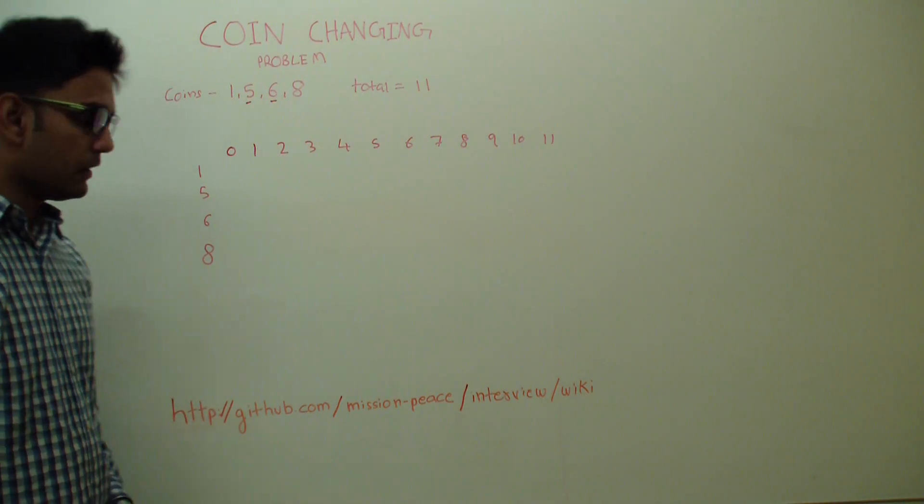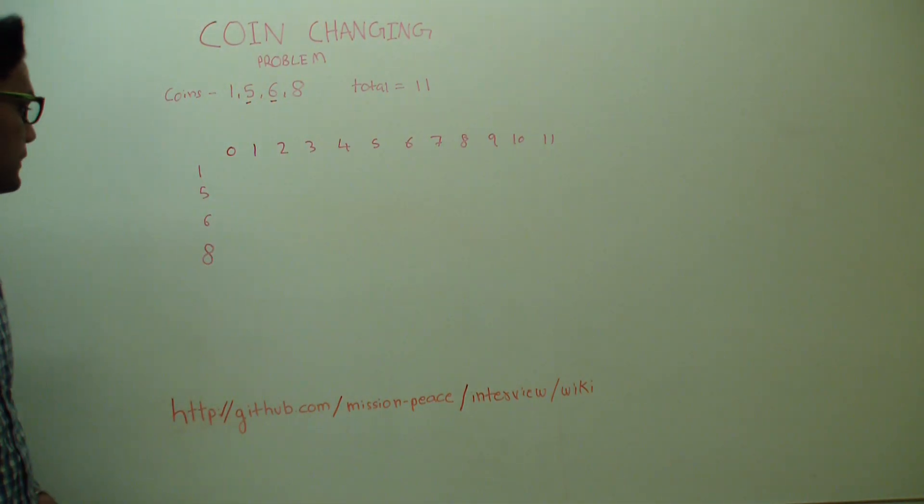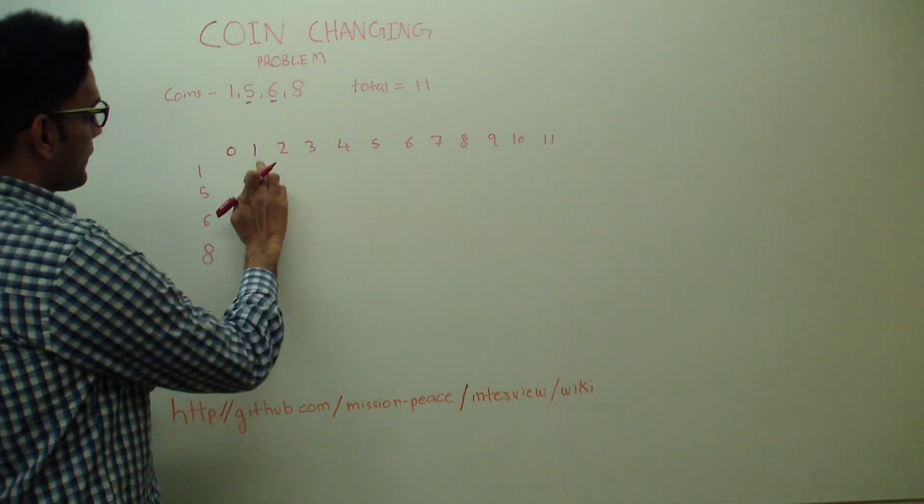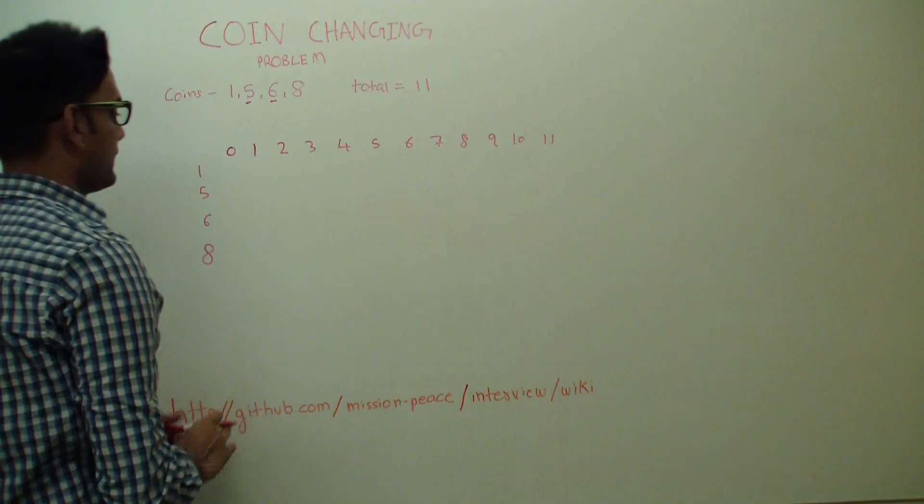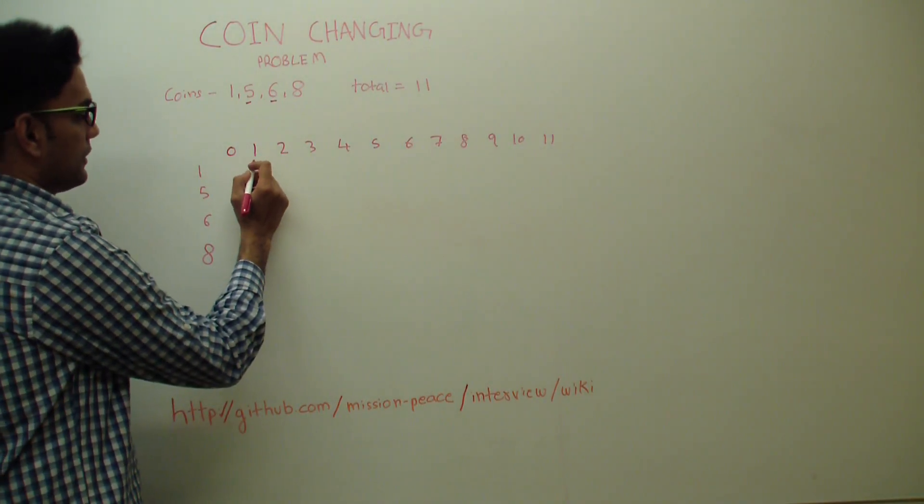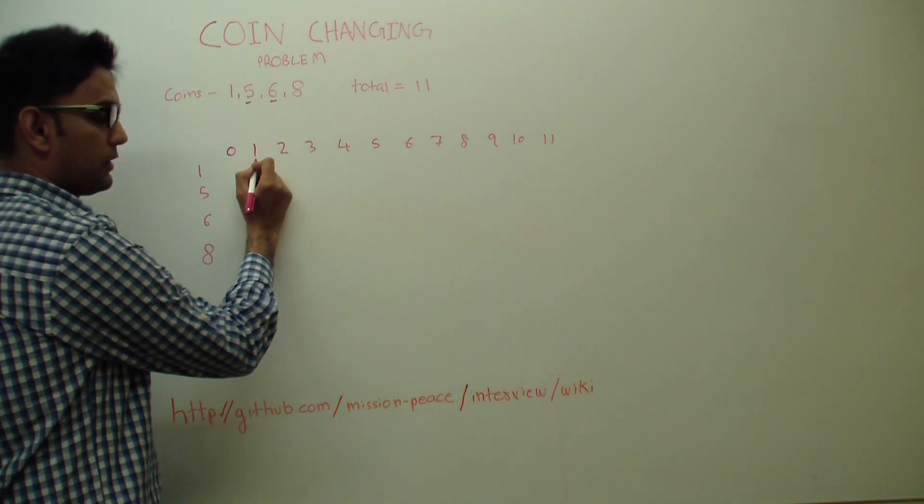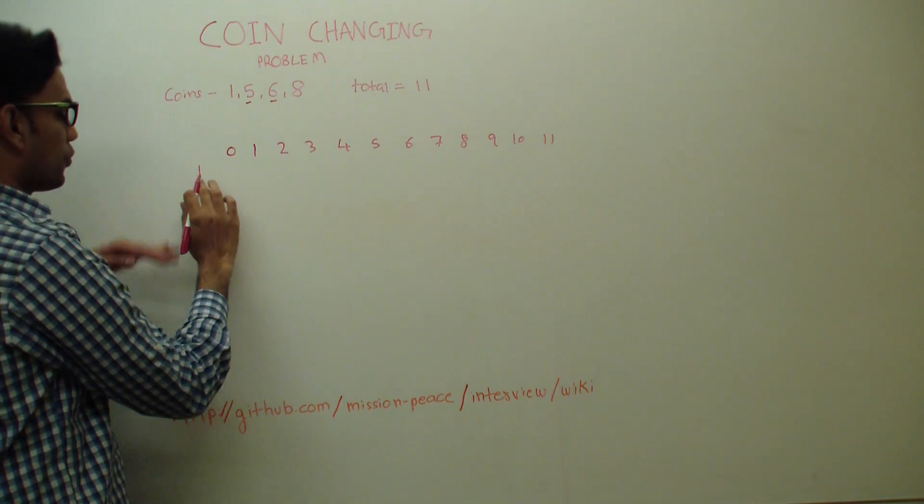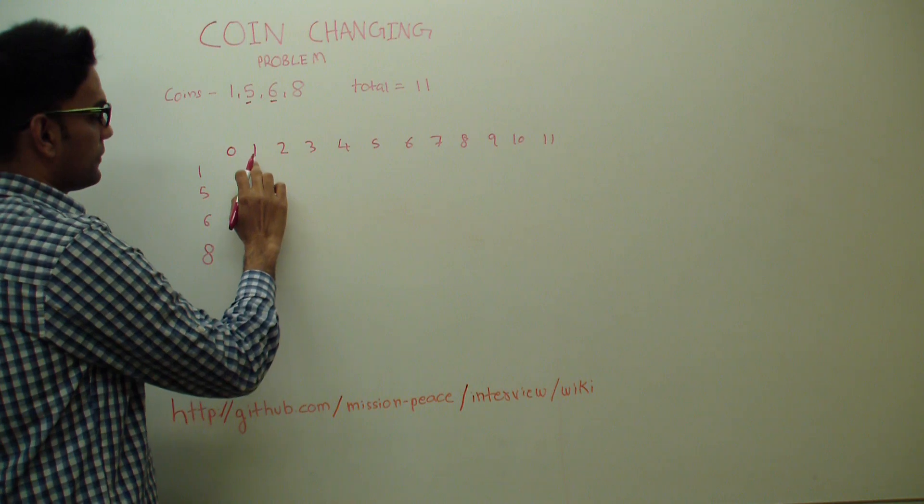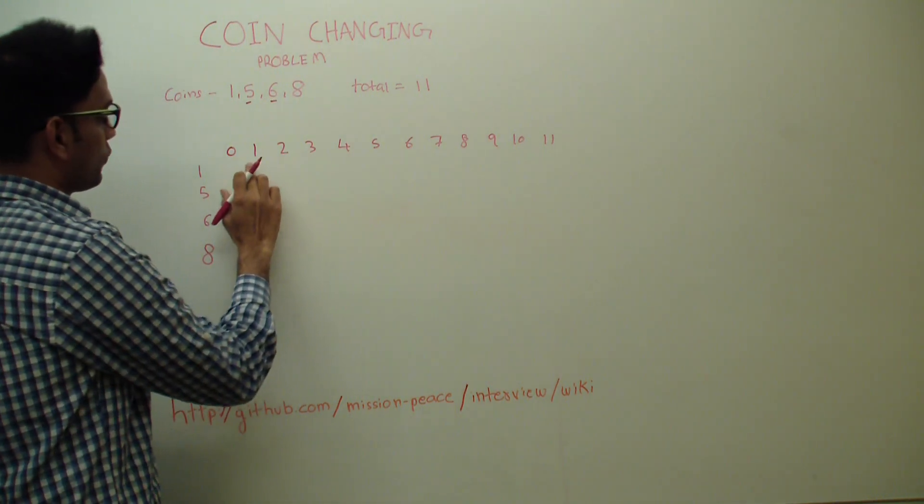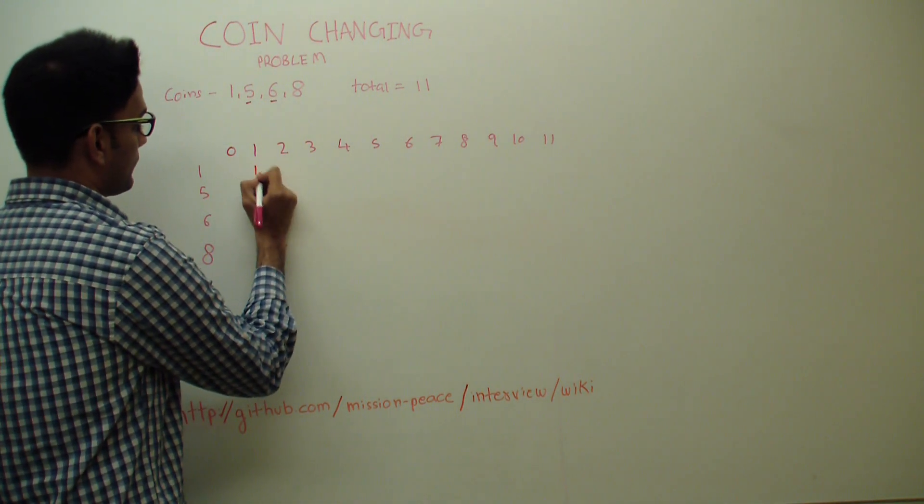Alright, so how do we build this matrix? So let's start from 1 and 1. Let's ignore everything else. If you have 1 total and if you have just 1 coin, how many minimum number of coins would you take to create this 1? So we know that it's 1.